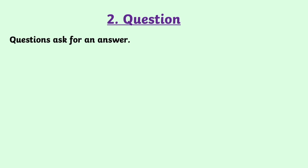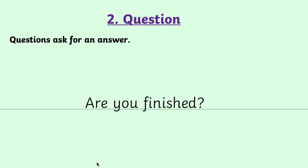The next type of sentence is a question. We use these all the time — we say them and we write them as well. Questions are easy to spot because they ask for an answer, and they always end in a question mark. There are two types of question: questions you can answer with yes or no, and questions that need a longer answer. For example, 'Are you finished?' — you can answer that with yes or no. And we can see the question mark at the end.